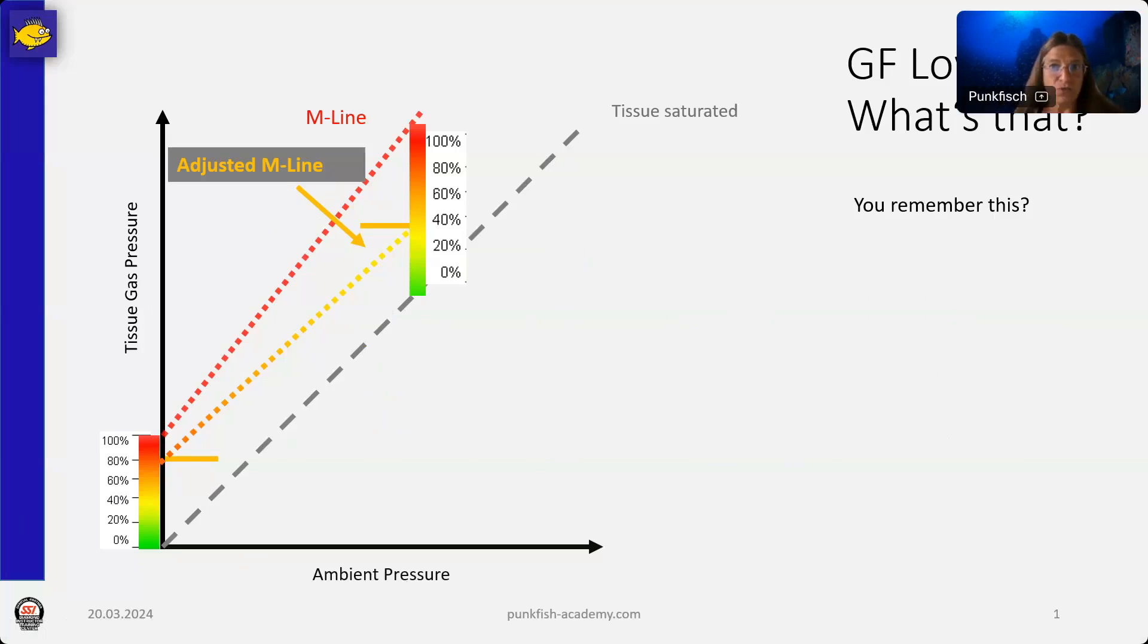Why? Because gradient factor low is the factor that is most discussed in the diving community, and is most difficult to know or most difficult to decide which one we want to use. It's not that simple.